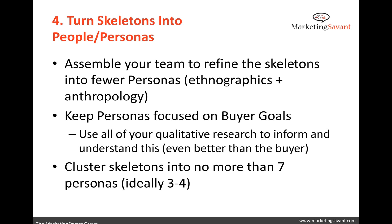We settle on no more than seven personas — most organizations settle on three or four. When thinking about social media content, it's really difficult to write for seven different human beings on your blog, Facebook page, Twitter, or any social channels. It's difficult to communicate to seven completely different personas about the same thing. We're talking about a discreteness of audience and offering, clustering them together so we have just a few personas that we're going to market to and communicate to.